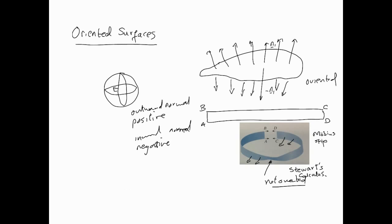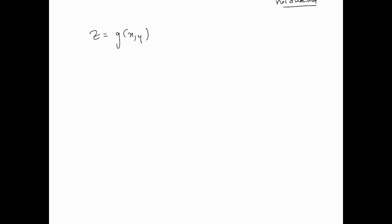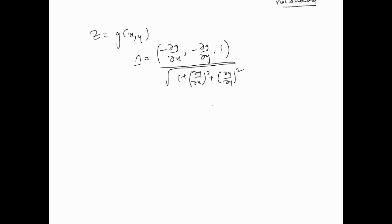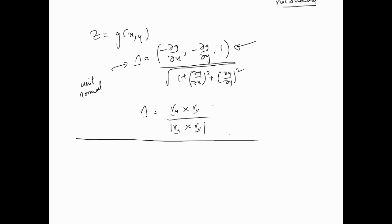Now we can move on to surface integrals of vector fields. Given any surface z equals some function g(x,y), the unit normal is calculated from the cross product — we've done this before. It's a unit normal because only direction matters, not magnitude. If the surface is parametrized, the unit normal is r_u cross r_v divided by the norm of r_u cross r_v.